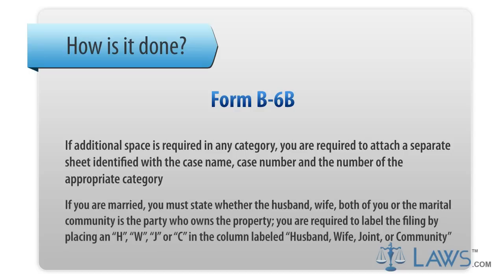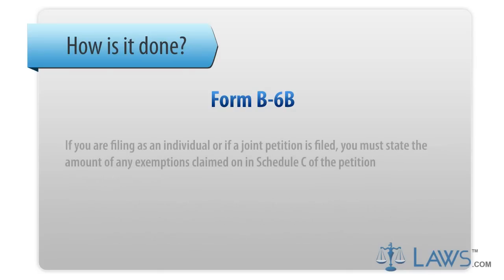You are required to label the filing by placing an H, W, J, or C in the column labeled Husband, Wife, Joint, or Community. If you are filing as an individual, or if a joint petition is filed, you must state the amount of any exemptions claimed on Schedule C of the petition.